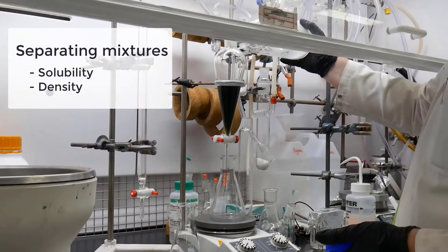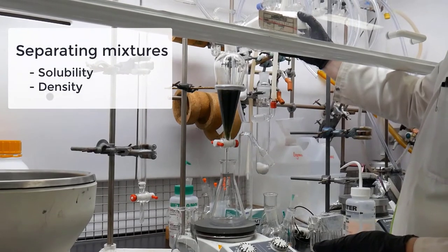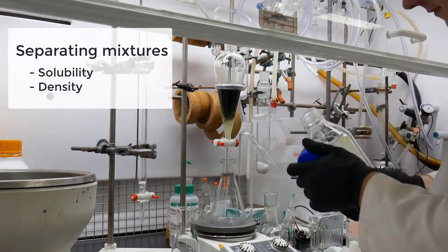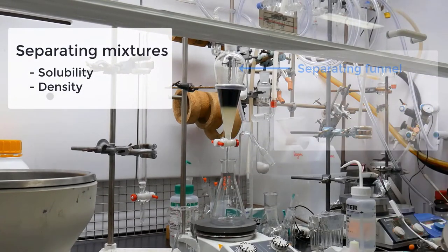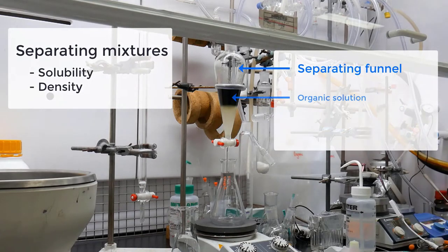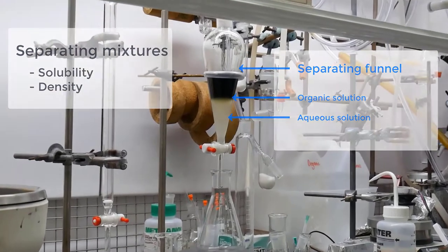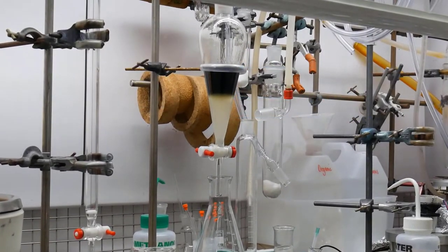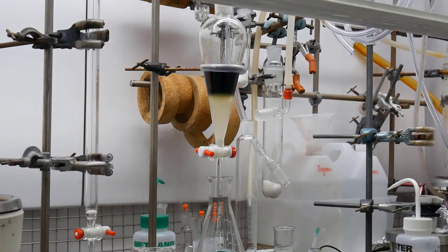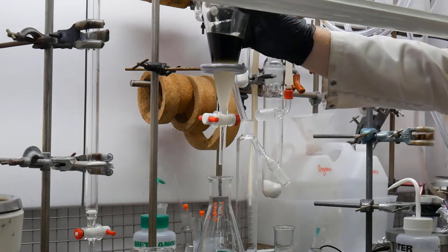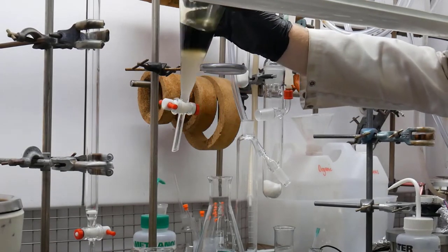As you can see here, I've got two separate layers of material in my separating funnel. One of them is organic and one of them is aqueous. Now we can use differences in solubility of molecules to get them to dissolve in either the organic layer or the aqueous layer, and then we can separate out these layers of solution.